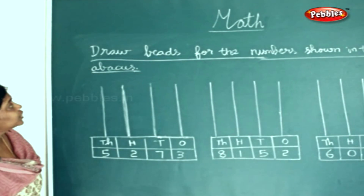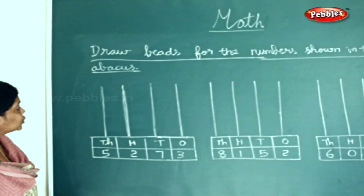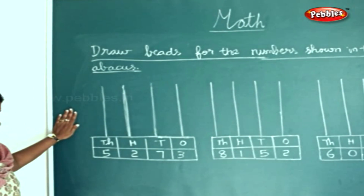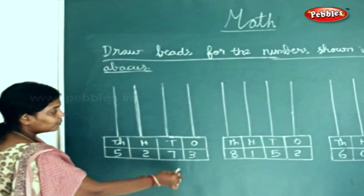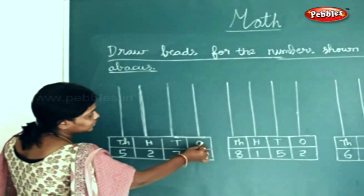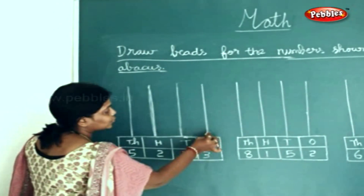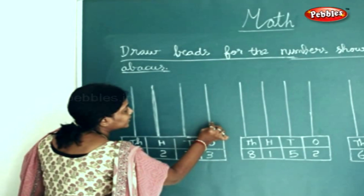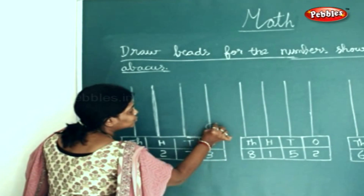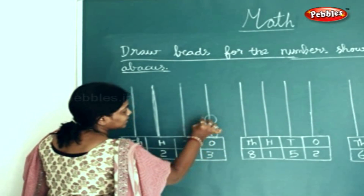Now we shall draw beads for the following number shown in the following backers. How many ones do you see here? 3 ones. So we draw 3 beads: 1, 2, 3.